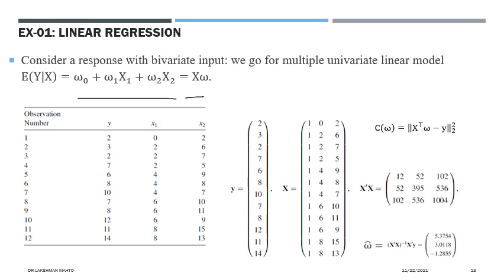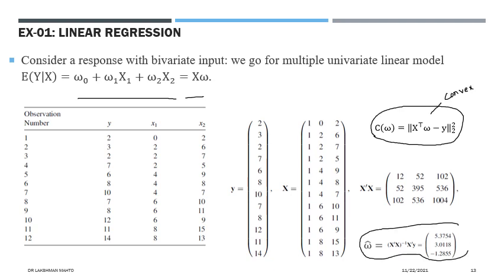Since the cost function for linear regression is convex, you are free to apply gradient descent, stochastic gradient descent, or any other optimization technique discussed in this course. All of those techniques will converge to a value very near the optimal. The remaining topics will be discussed in the next class.